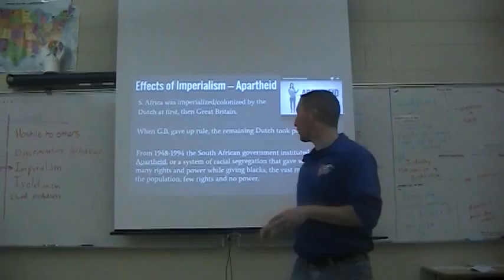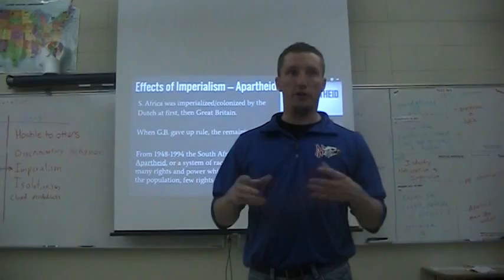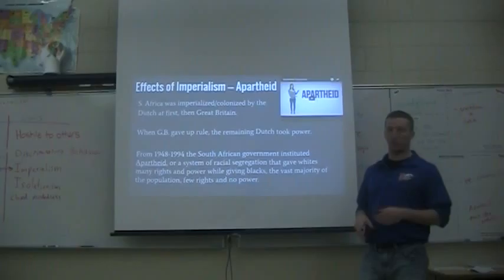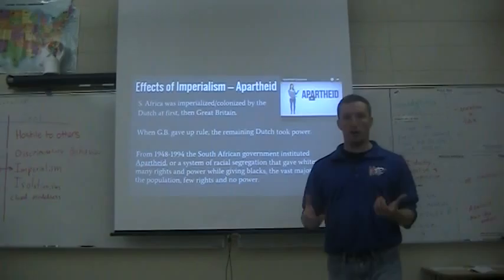The Dutch were a large minority. It was probably around 90% truly native Africans — black people — and probably 10% Dutch white people. But the Dutch were the ones to take control. So from 1948 to 1994, they had this concept called apartheid, which was a system of racial segregation. Think 'apart' — apartheid means separate. That gave whites many rights and power: they could own businesses, they could do whatever they want, while giving blacks very few rights and essentially no power.